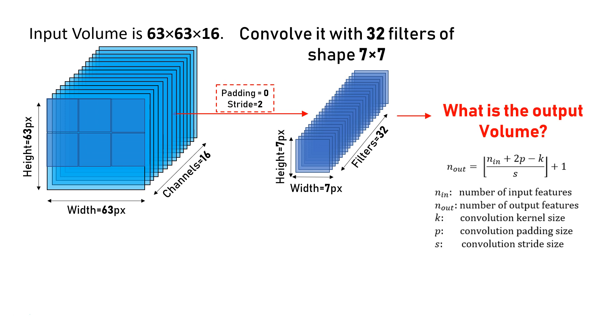This formula includes the number of input features, number of output features, convolutional kernel size (it is the filter size), the convolutional padding size, and stride size.